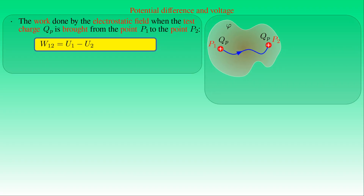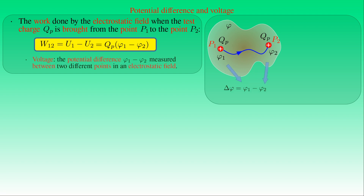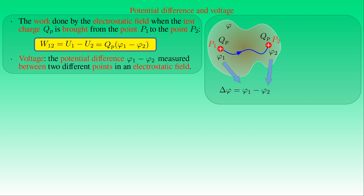Based on the definition of electrostatic potential, the work done by an electrostatic field when test charge QP is brought from P1 to P2 equals the difference in potential energy of QP at those points. This difference can be written as QP times (φ₁ − φ₂), i.e., the product of the charge displaced and the potential difference between initial and final points. Since the potential difference is called voltage, the work done equals charge times voltage.